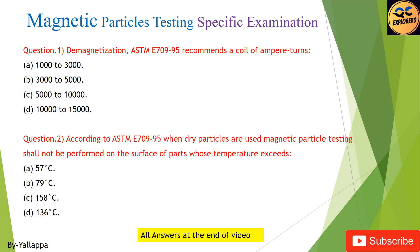Question 2: According to ASTM E709-95, when dry particles are used, magnetic particle testing shall not be performed on the surface of parts whose temperature exceeds: (A) 57°C; (B) 79°C; (C) 158°C; (D) 136°C.